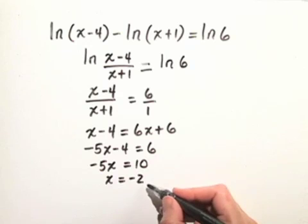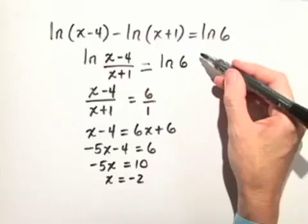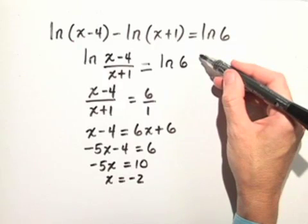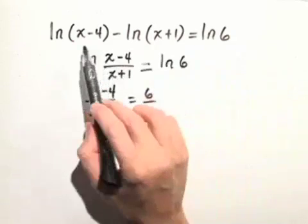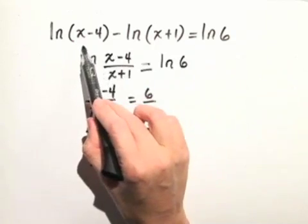Now this is one of those cases where it's absolutely necessary that we check this answer back into our original equation because our equation had to do with logarithms. Remember, the argument for a logarithm can never be 0 or a negative number.